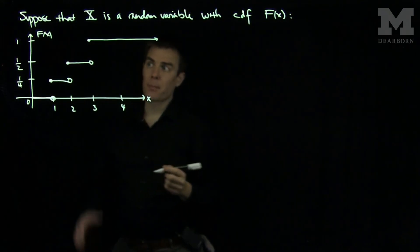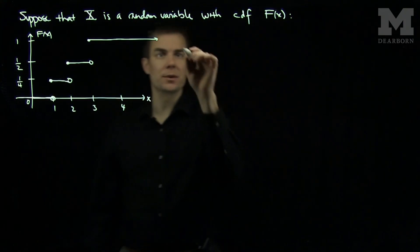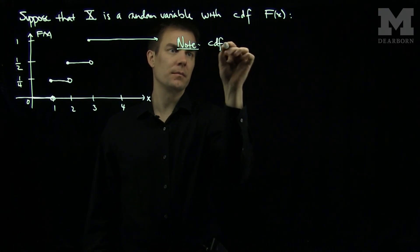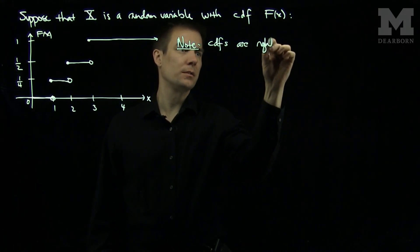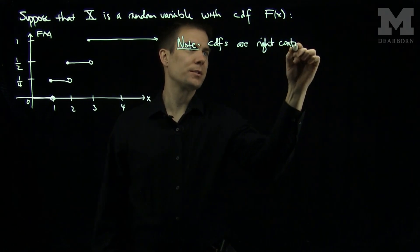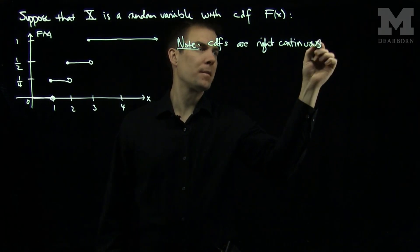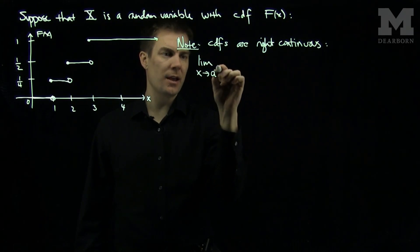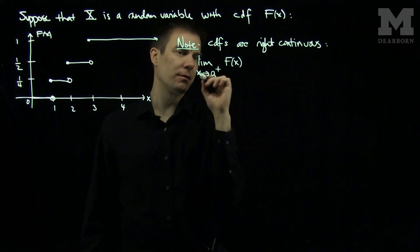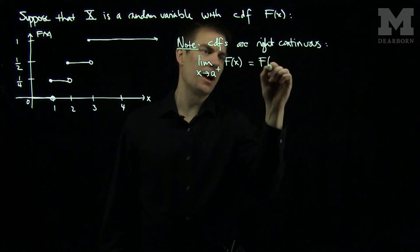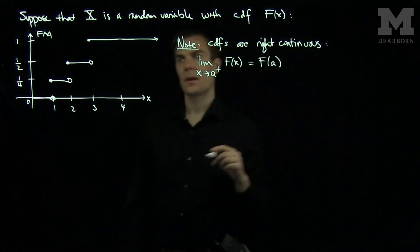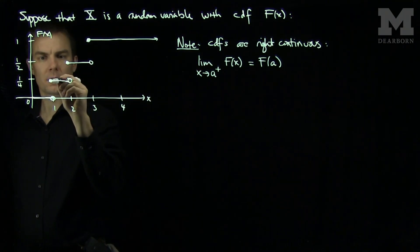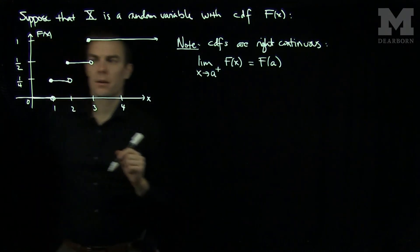So this is my CDF. Remember that CDFs need to be right continuous. Just note CDFs are right continuous, meaning that when I do the limit as x approaches a from the right of my CDF F(x), I have to get F(a). And that makes sense over here, so that's why all of the closed dots are on the far right.